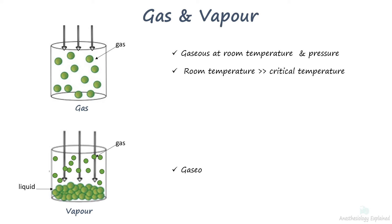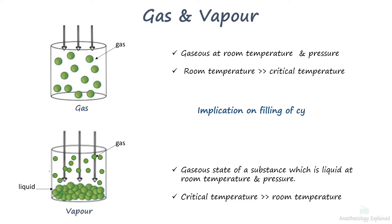Vapor is the gaseous state of a substance below its critical temperature. At room temperature and atmospheric pressure, the substance is liquid. This nature of the gases has an implication on the filling of cylinders and the measurement of cylinder content.